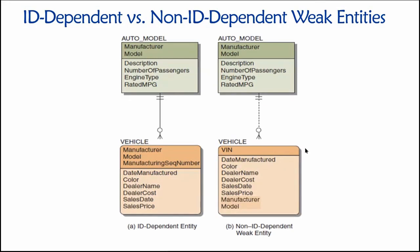So to summarize: rounded corners are new — those indicate weak entities. Whether the relationship line is solid or dashed is also new — if it's solid, it means it's an identifying relationship; if it's dashed, it means it's non-identifying.